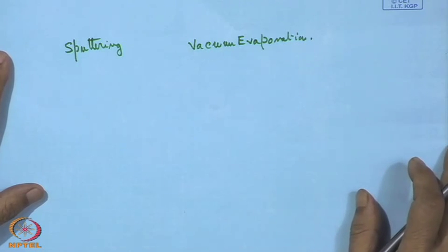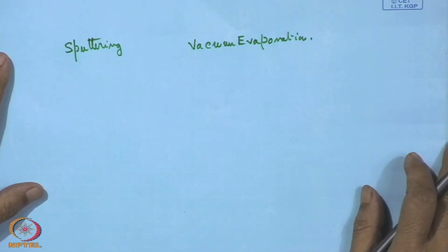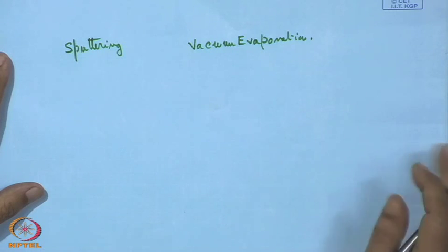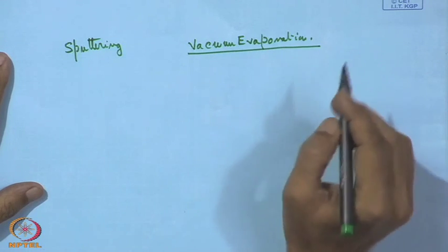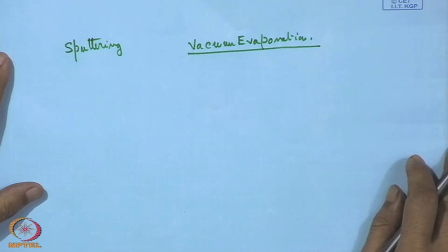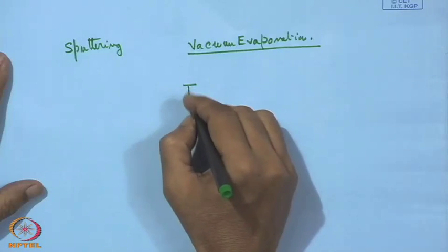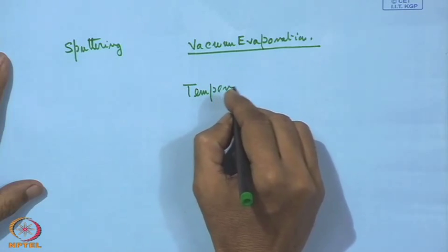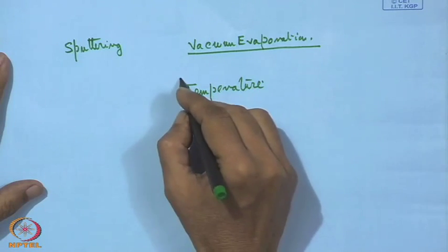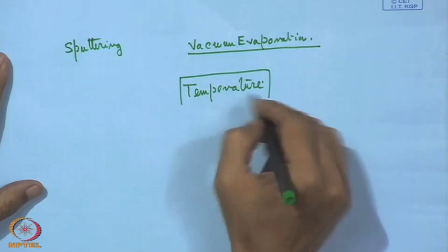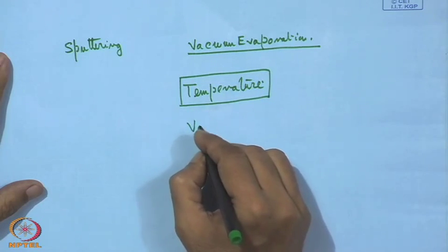The principle of deposition we should understand here: since it is vacuum evaporation, material has to evaporate under a vacuum environment. For evaporation of the material, we need a heat source - that means we need temperature. This is number 1. And number 2, a vacuum environment.